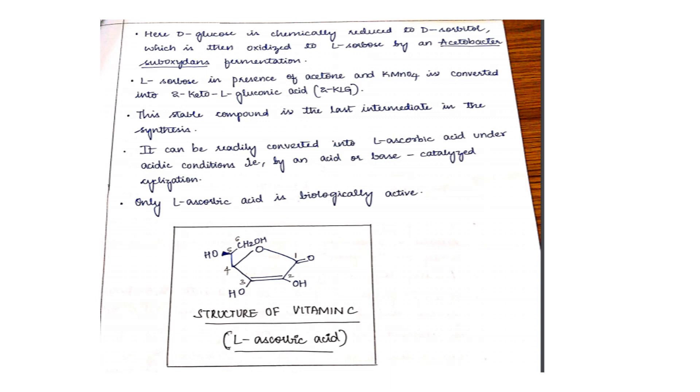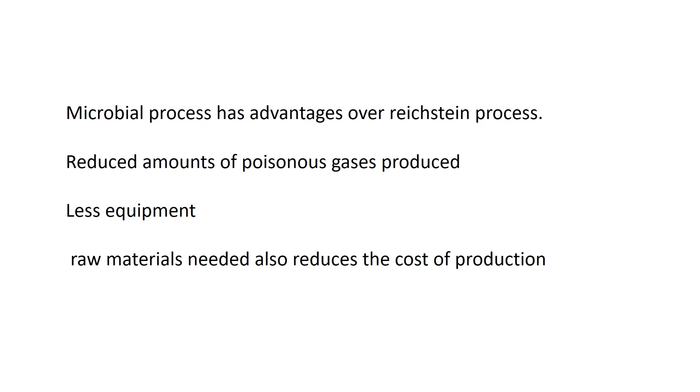Ultimately, it results in the production of vitamin C - ascorbic acid. The stable ultimate product is 2-keto-gluconic acid. Microbial process has advantages over Reichstein process because it reduces amounts of poisonous gases produced. Less equipment are required, raw materials needed also less, so cost of production is less and is more effective yield wise.